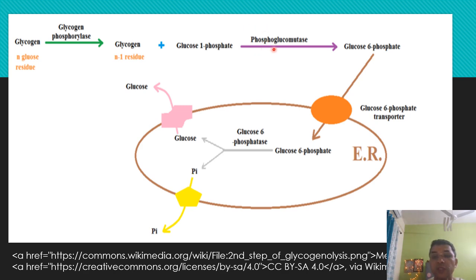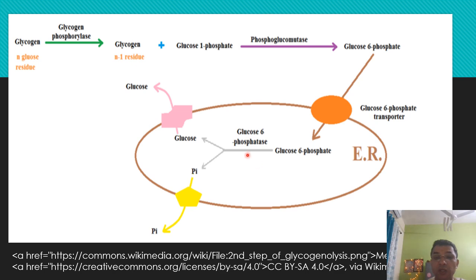Glucose-6-phosphate is transported into the lumen of the endoplasmic reticulum via a glucose-6-phosphate transporter. Inside the ER, the enzyme glucose-6-phosphatase removes the phosphate group from the 6th position. Free glucose then exits through a glucose transporter into the cytosol, and the phosphate is also released.